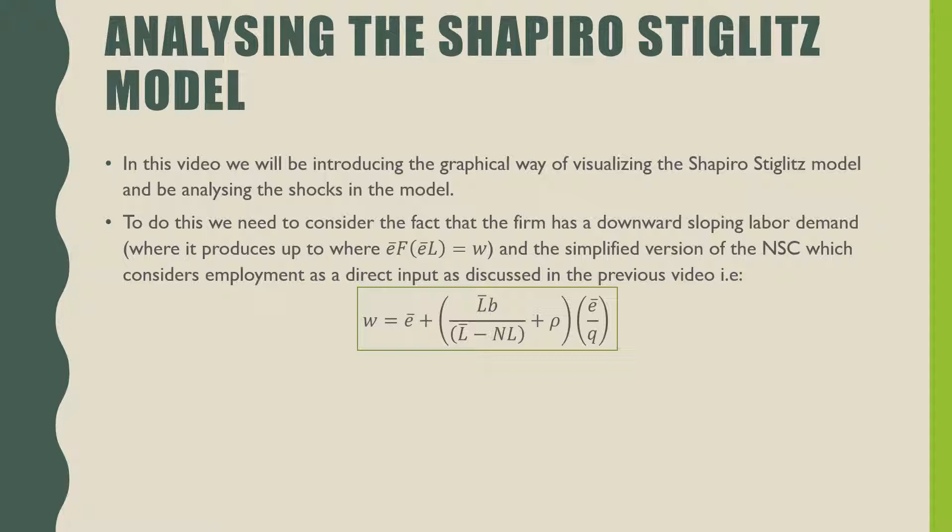As discussed in our previous video, W equals E bar, which is the effort exerted, plus L bar times B, which is the total labor force times our job breakup rate, all over L bar minus NL, which is the difference between the total labor force and the number of workers working, plus Rho times E bar all over Q, where Q is our shirking detection rate where a firm will go and if they see a worker shirking they're going to fire him.